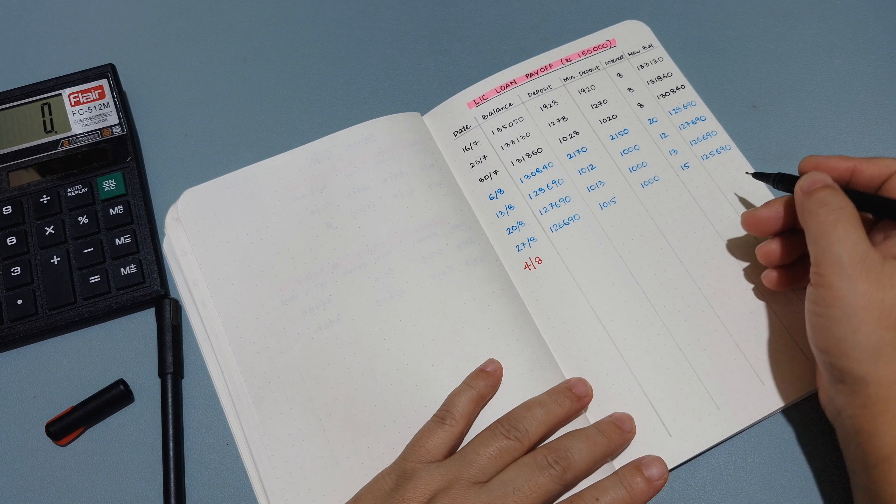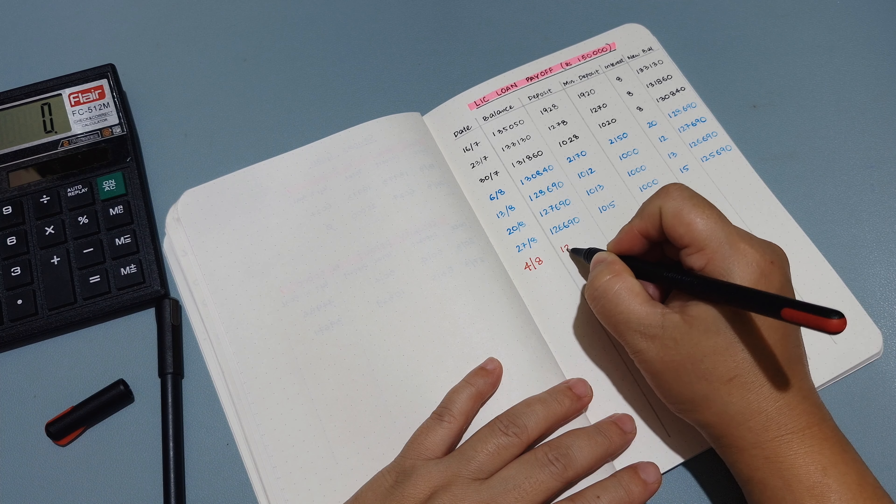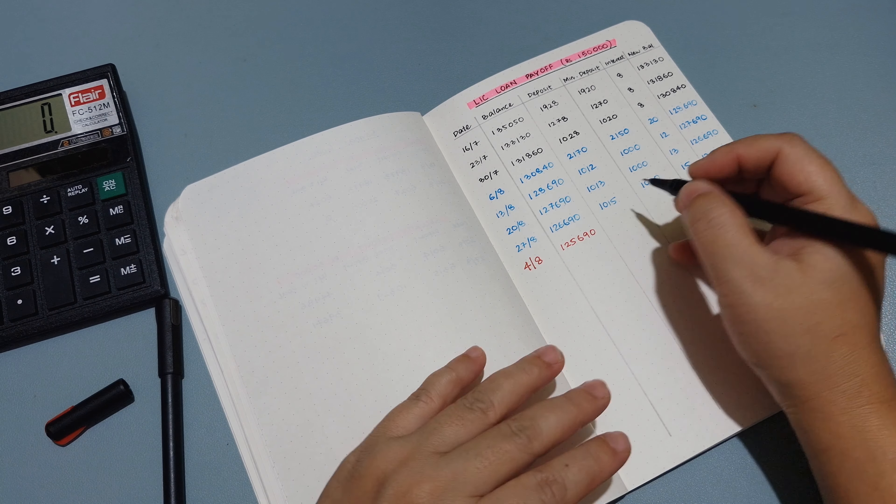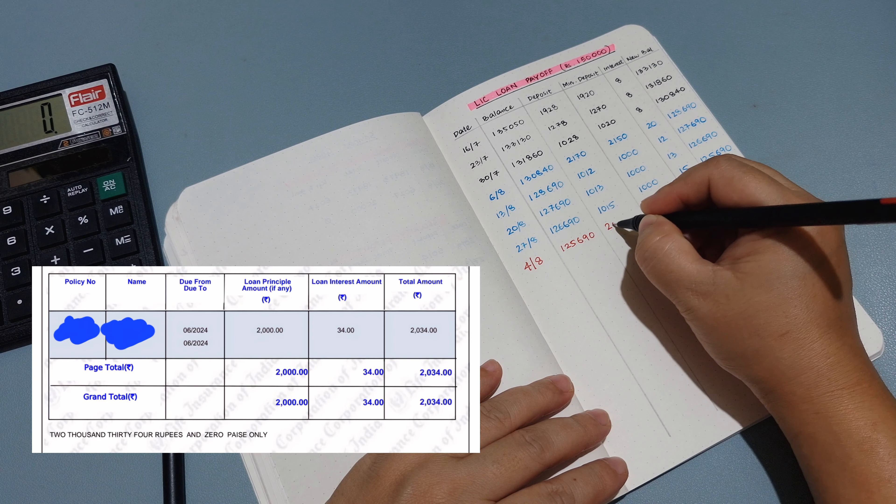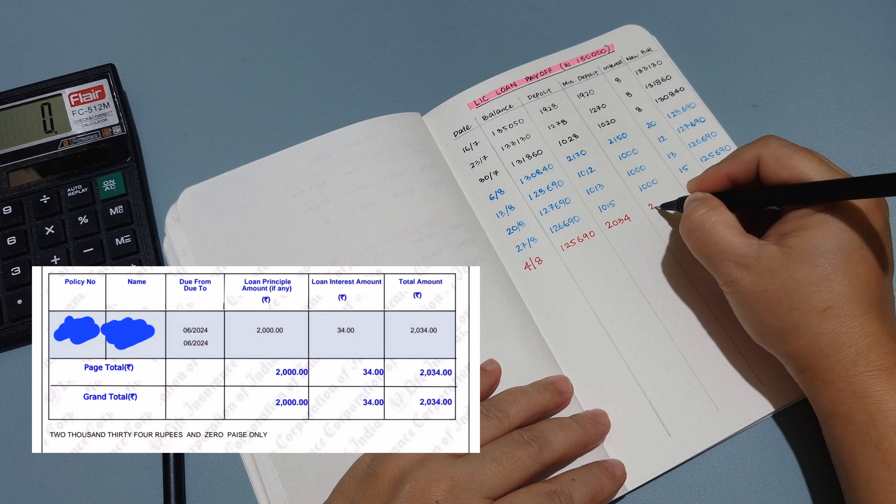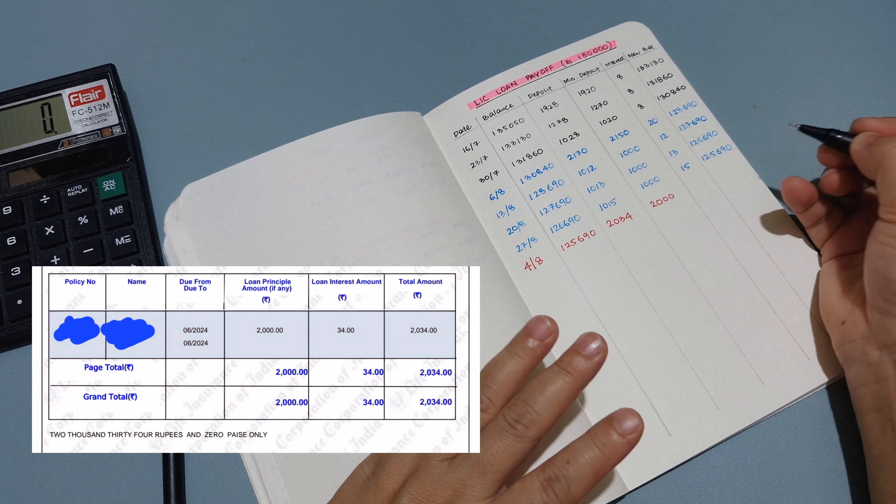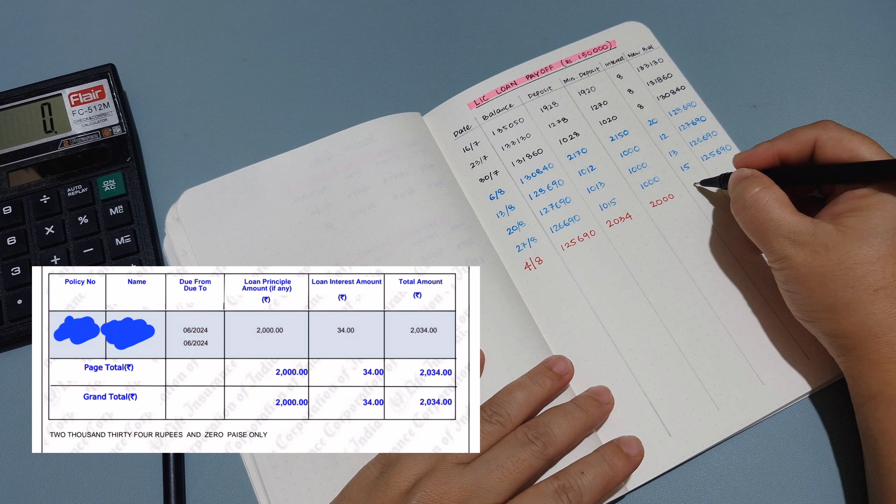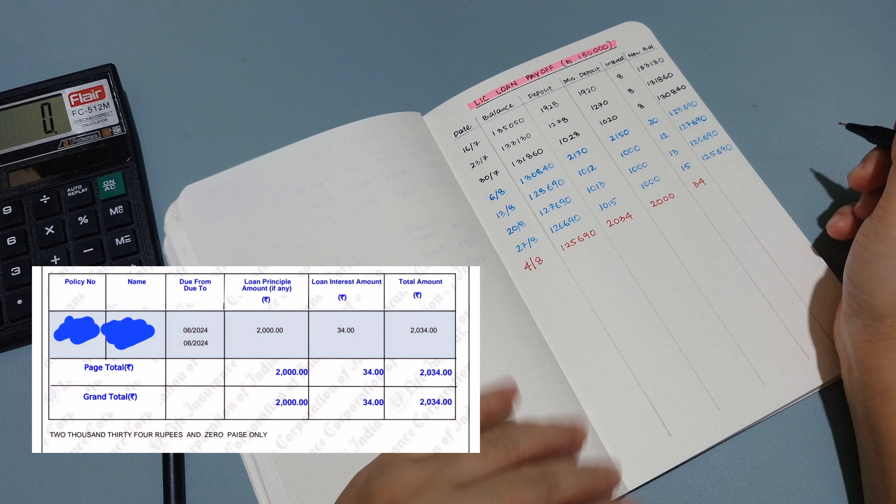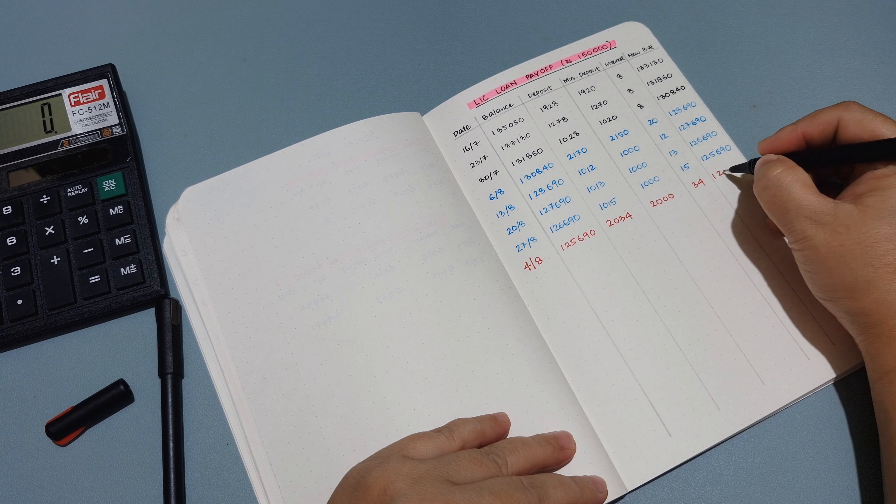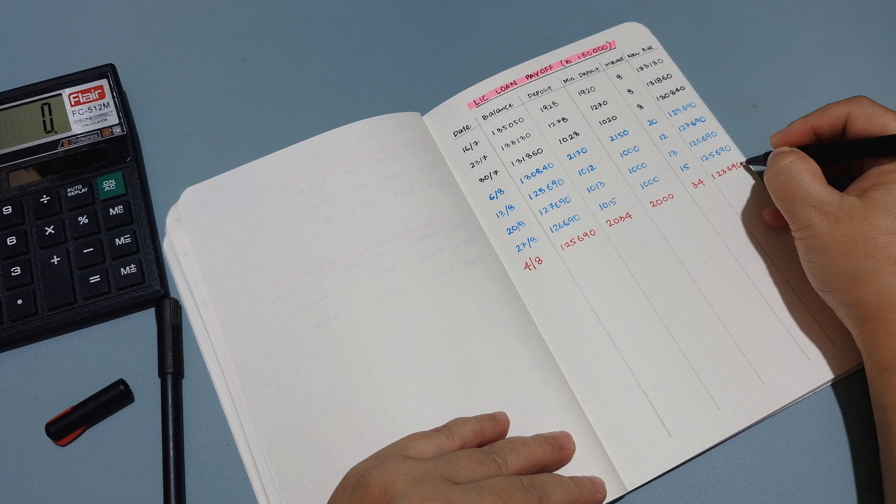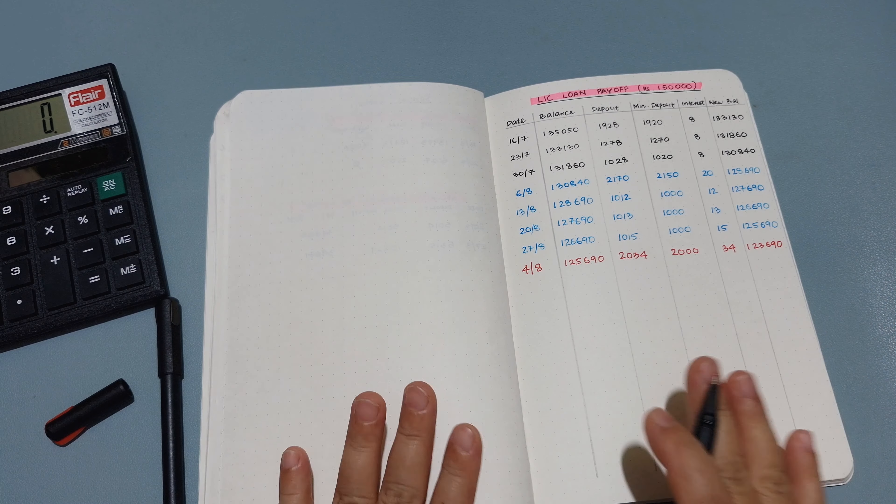So last week's balance was 1,25,690 rupees and into my LIC loan I allocated 2,034 rupees. 2,000 being the amount that went into my principal deposit and then 34 rupees was the interest that I paid. So that now leaves us with 1,23,690 rupees as a new balance for my LIC loan.